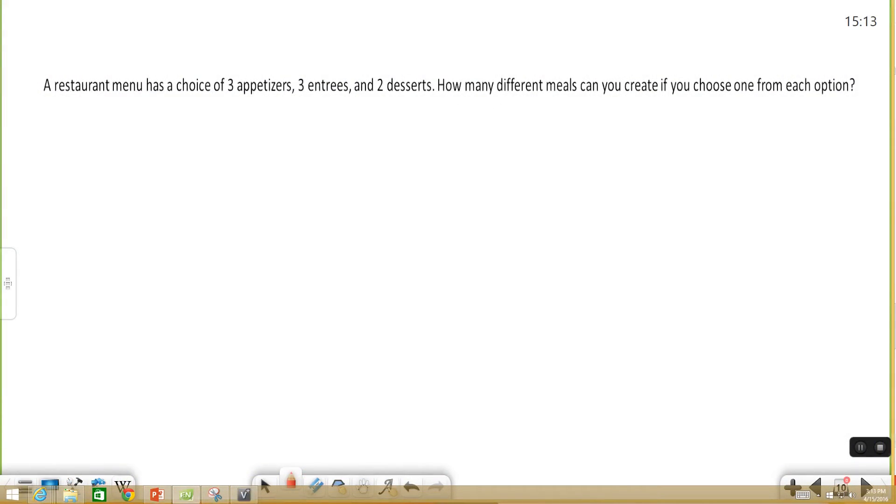So an example you might get would read, a restaurant menu has a choice of three appetizers, three entrees, and two desserts. And then they would ask you, how many different meals can you create if you have to choose one appetizer, one entree, and one dessert?